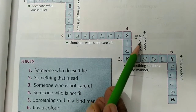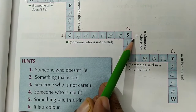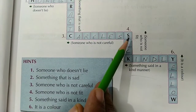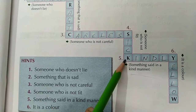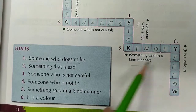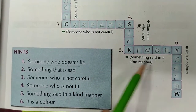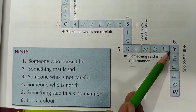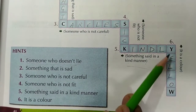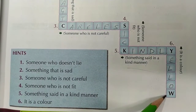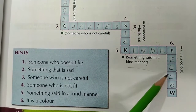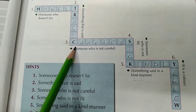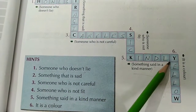Fourth word: someone who is not fit — starts with S and ends with K. That is Sick — S-I-C-K. Fifth: something said in a kind manner — Kindly, K-I-N-D-L-Y. Last word: it is a color, starts with Y and ends with W — Yellow, Y-E-L-L-O-W. So our answers are: Honest, Tragic, Careless, Sick, Kindly, and Yellow.